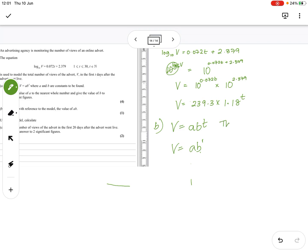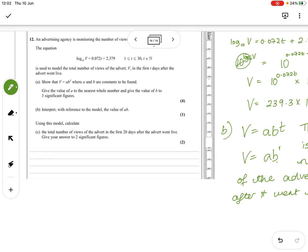So the value of AB is the total number of views, because that is what V is, views of the advert, one day after it went live. Okay, so we have this, so very clear - views of the advert after it went live, AB to the power 1.